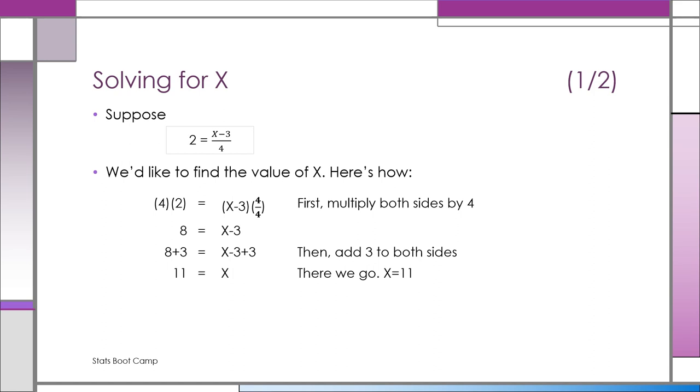What you got to do is multiply both sides by 4. Now you'll have 8 equals x minus 3. Now you got to bring the 3 over to the other side. So you add 3 to both sides. So now you have 8 plus 3 equals x minus 3 plus 3, which is just x. So x equals 11.